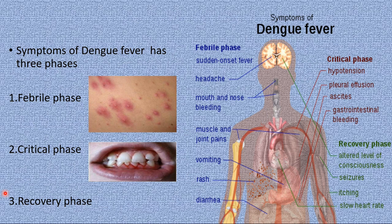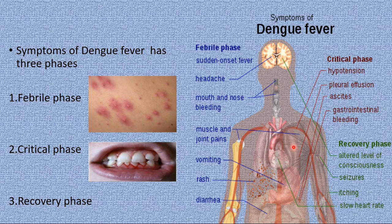The symptoms of dengue fever are classified into three phases. The first is the febrile phase, characterized by sudden onset fever, headache, mouth and nose bleeding, and muscle and joint pains — known as break bone fever. The patient may also experience vomiting, rash, and diarrhea. These are the initial stage symptoms, which last for approximately seven days after dengue infection.